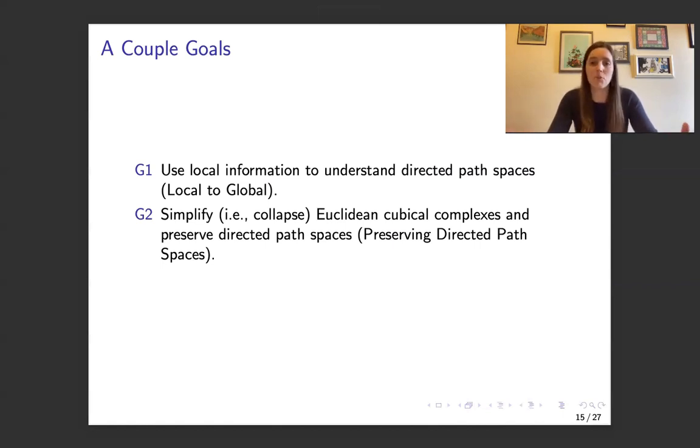But there might be a couple of questions we want to answer. So one, is there a way to use local information from our grid or our complex in order to understand these directed path spaces? So this is a local to global problem. And then the second question is, is there a good way to simplify these complexes so we can see these path spaces a bit better?